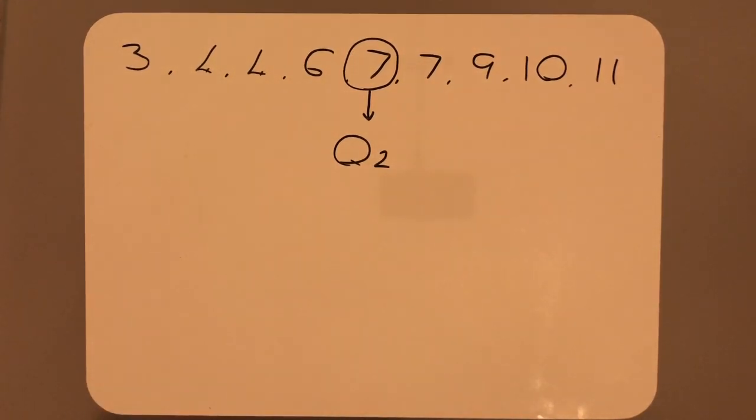From there, we examine the lower half and we find the median of the lower half. We have four pieces of data. If we split that in two, it means there should be two terms on either side of the median.